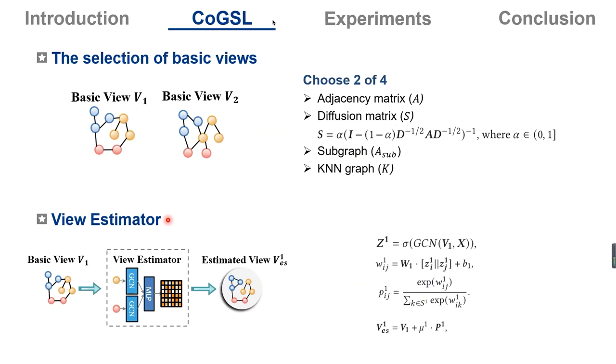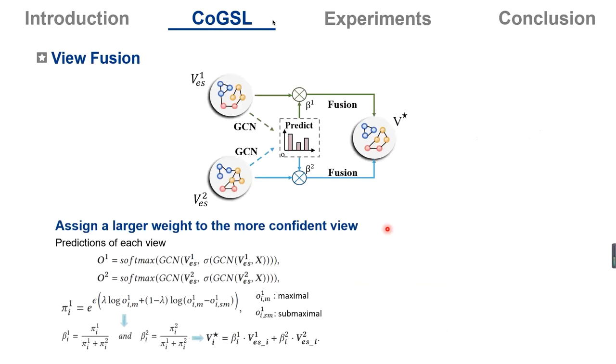And then we design a view estimator to modify the basic views to make them more flexible. For the basic view V1, we use a GCN to get node embedding under this view Z1. We concatenate the embeddings of node i and j and get the importance between them by an MLP. And then we normalize all the importance to get the probability. And finally, we combine the learned probability matrix and the original basic view V1 with the coefficient mu1 to get the estimated view V_est1. And V_est2 can be obtained in a similar way.